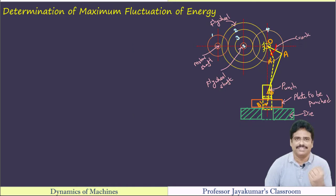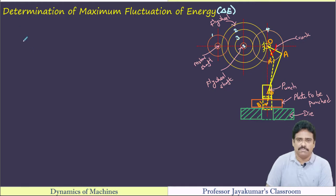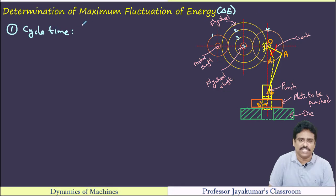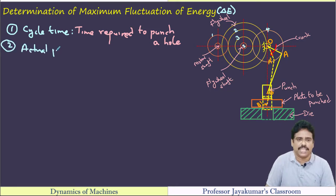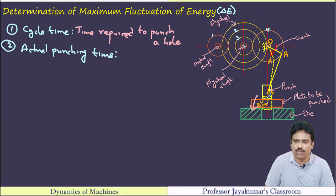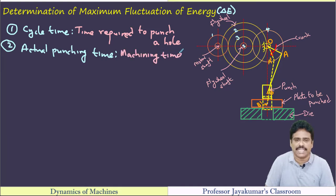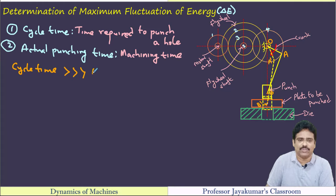Wherever flywheel design is involved, determination of maximum fluctuation of energy is involved. Before going there, we need to know a few key terms in punching problems. First, cycle time — what is cycle time? Cycle time means the time required to punch a hole. The total time required for one 360-degree rotation of the crank is known as cycle time. Second, actual punching time — when the punch is touching the plate, how much time it takes to make the hole — that is known as actual punching time, or actual machining time. Of course, cycle time will be greater than actual punching time.